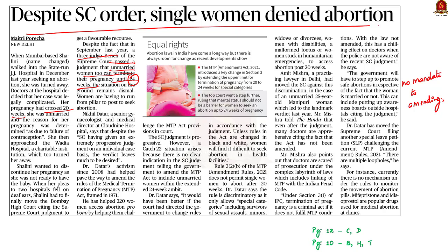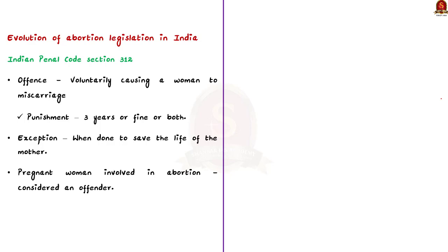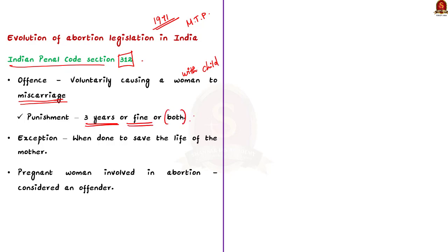India legalized abortion in 1971 by passing the Medical Termination of Pregnancy Act. Before 1971, abortion was guided by IPC Section 312, which states that voluntarily causing a woman with child to miscarriage is an offence attracting a jail term of up to three years or fine or both, with an exception if done in good faith to save the life of the pregnant woman. The pregnant woman causing herself to miscarry was also an offender under this provision.